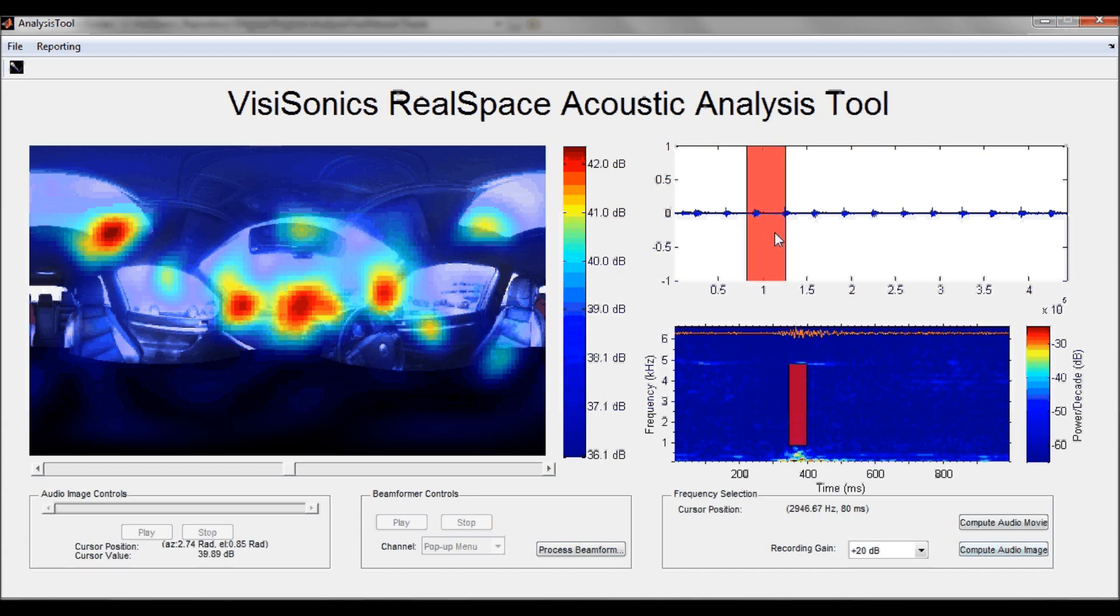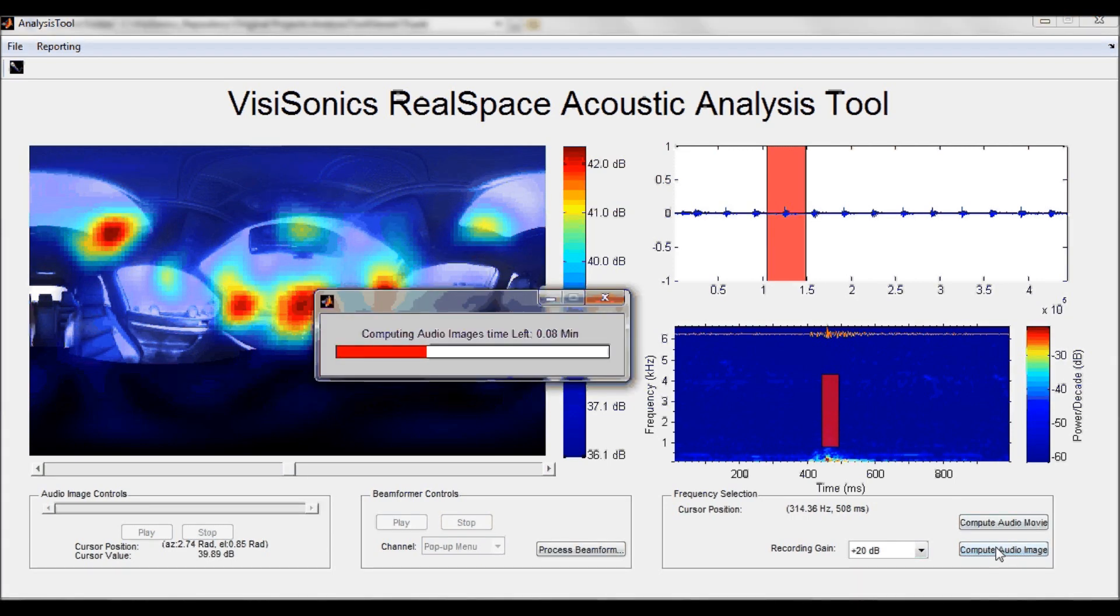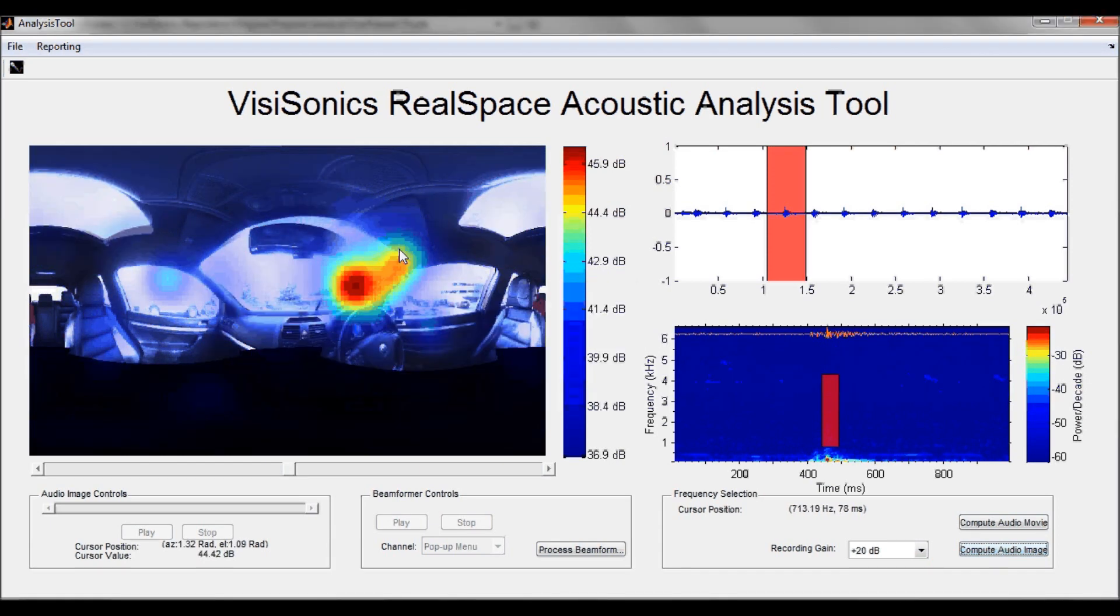Let's move to the next peak, which would be an upward turnover, and select the range associated with that flip. Here we can see the right windshield wipers generating the majority of the energy at about 45.7 dB SPL.